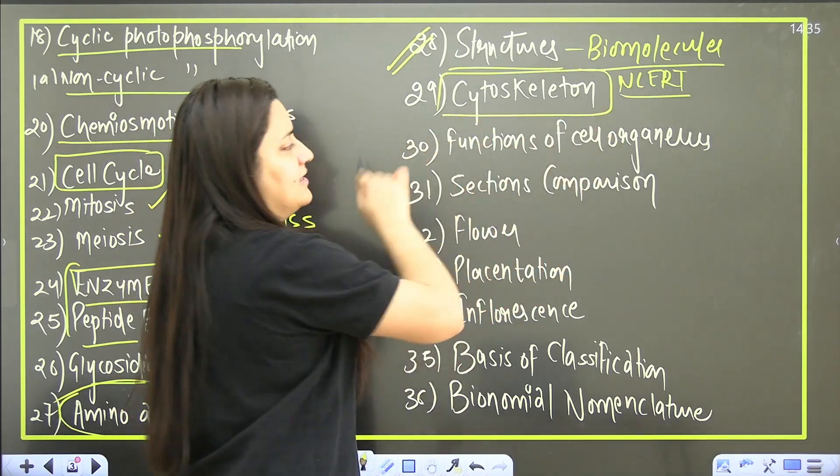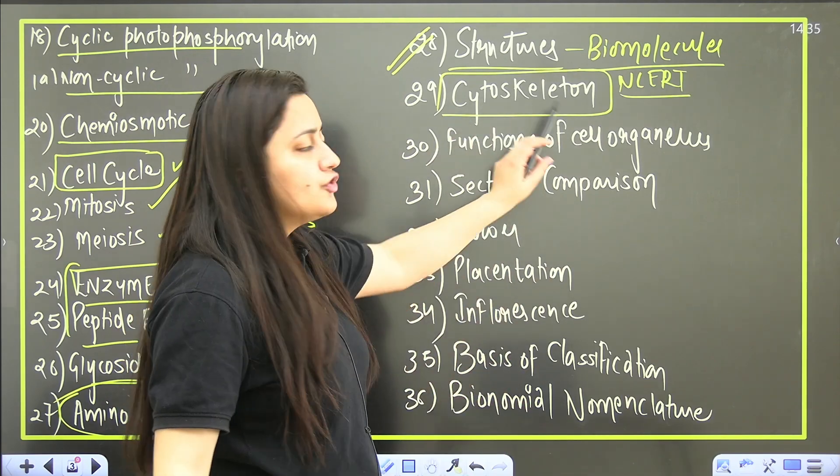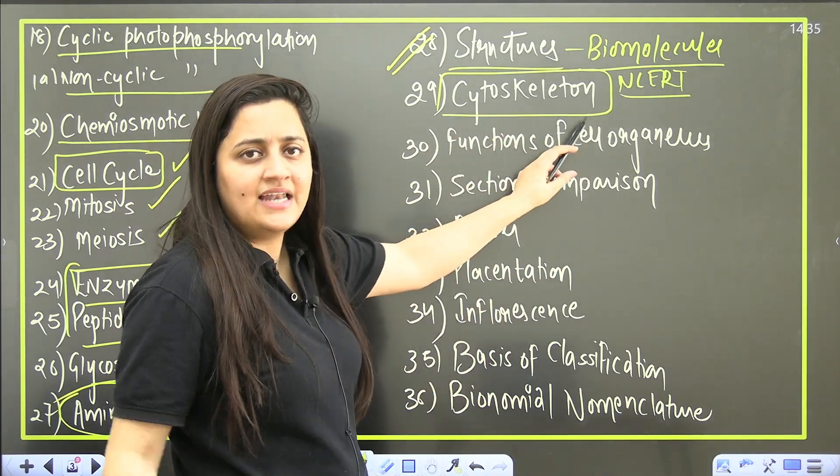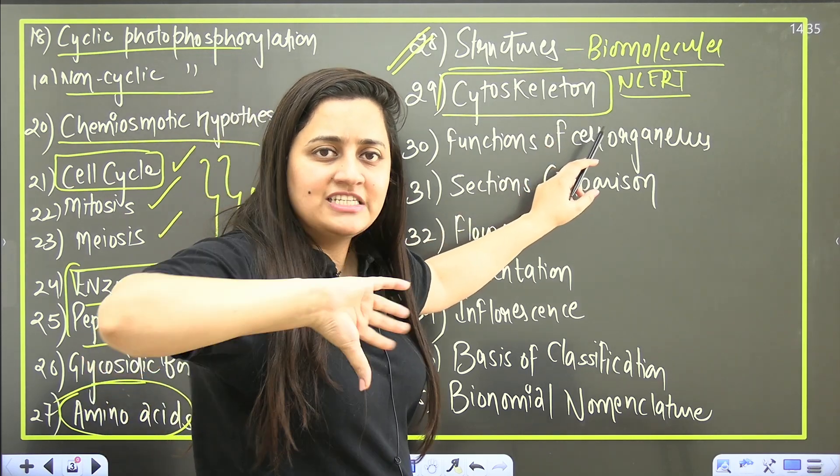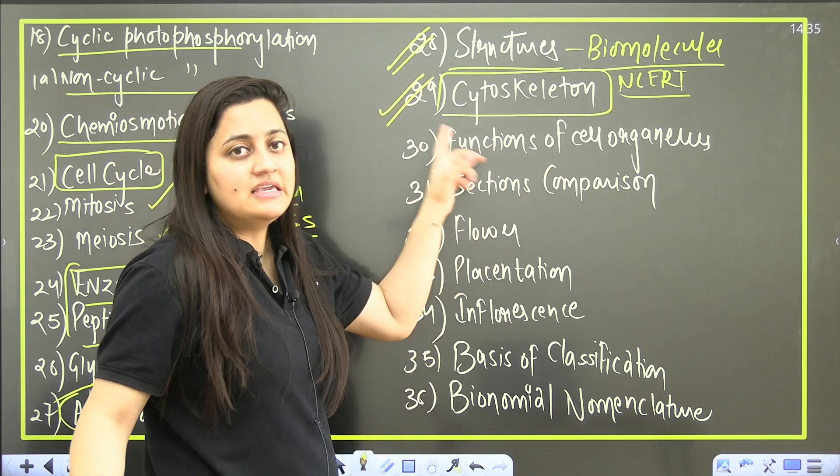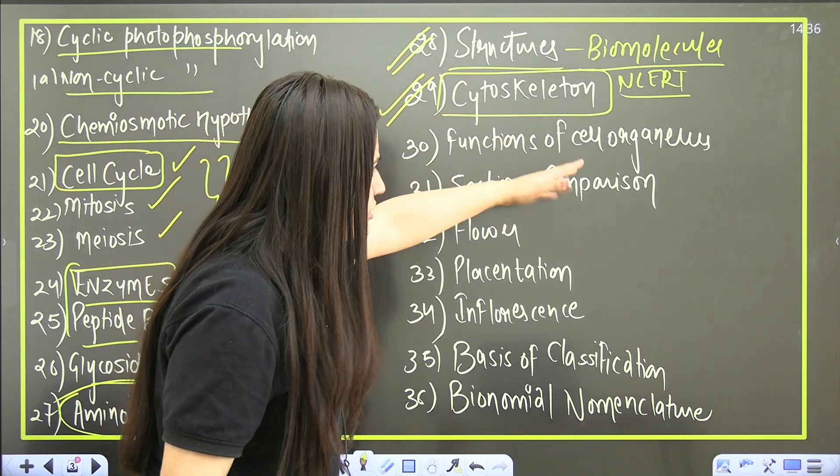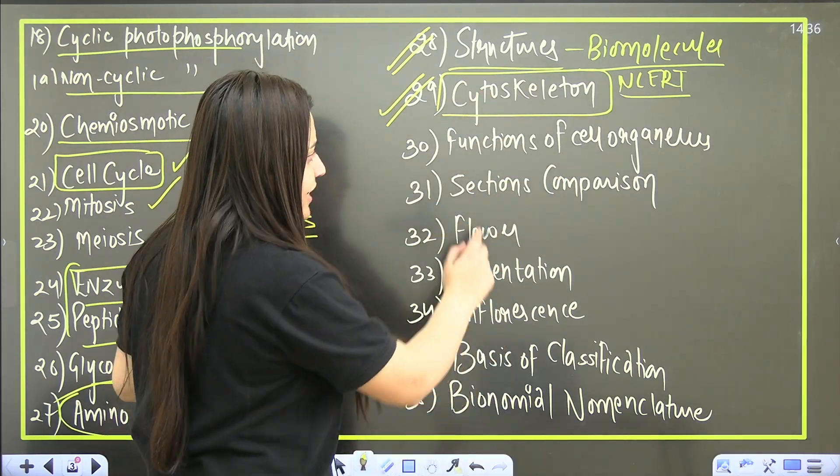When you talk about the cell chapter - cytoskeleton, microtubules, microfilaments, intermediate filaments you should know them. If you will cover cytoskeleton, automatically that cilia flagella part will be completed. Do not miss this topic for this particular year. For NEET 2024 for sure you will get a question from this part. Then function of cell organelles is unavoidable.